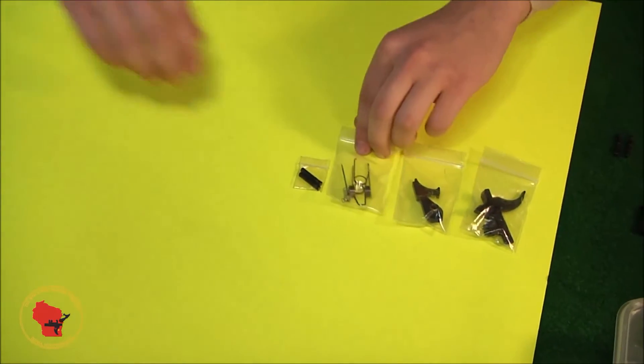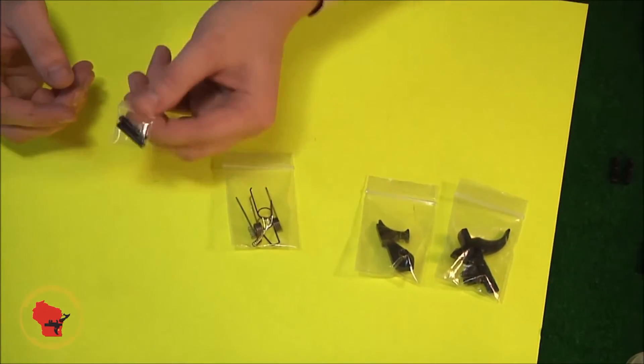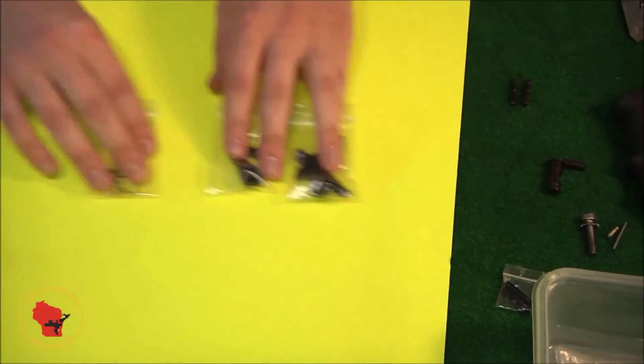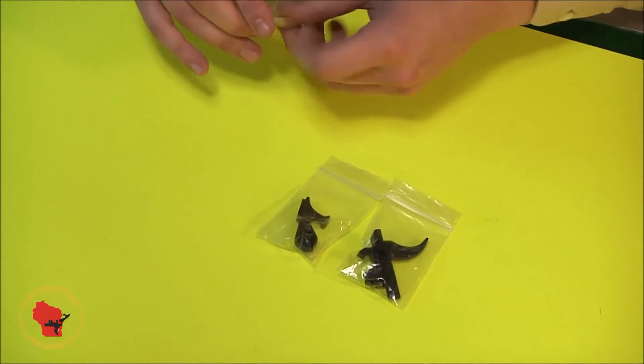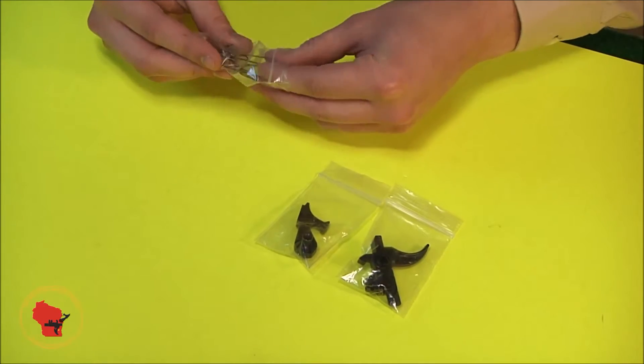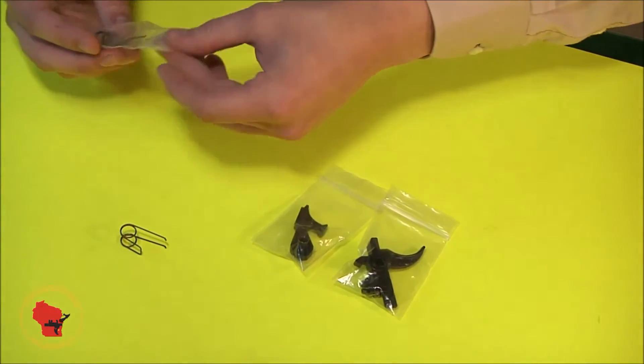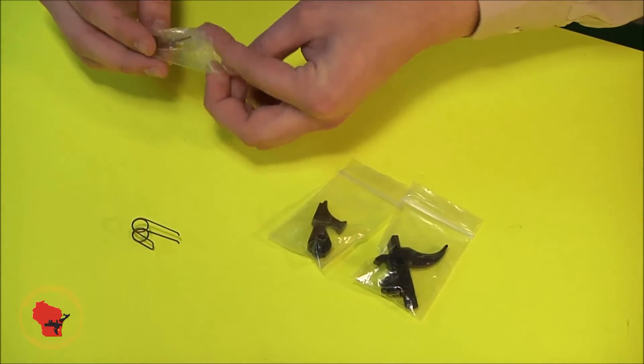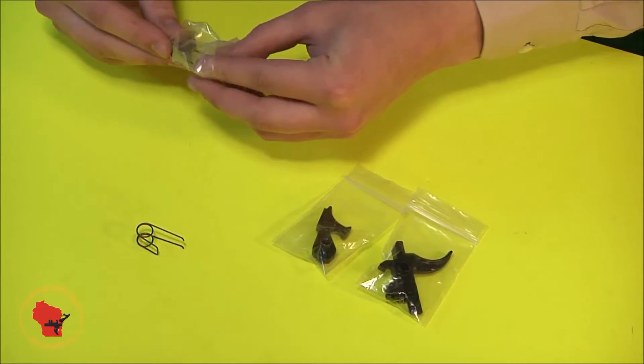First, we'll be putting the springs on the trigger and hammer. You can set the pins aside. We actually won't need those again until video three. And the only springs we need out of the spring bag are the trigger spring and the hammer spring.